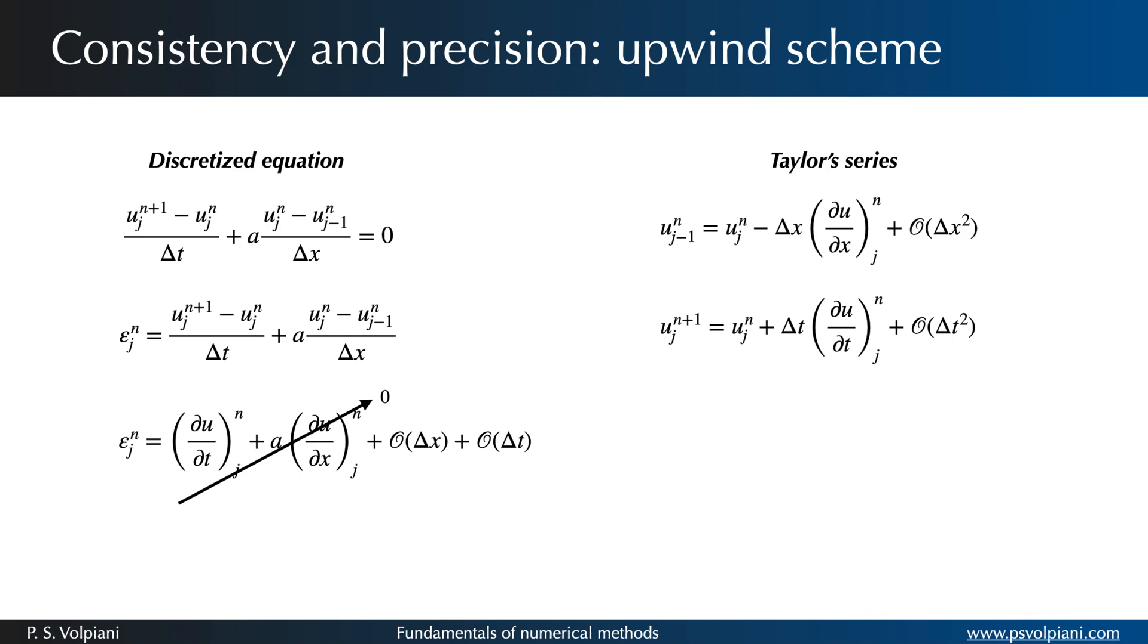Using these results in the definition of the truncation error we obtain that the truncation error tends to 0 when delta t and delta x tend to 0 evolving in order 1 in time as well as in space. The numerical scheme is therefore consistent with a precision of order 1.